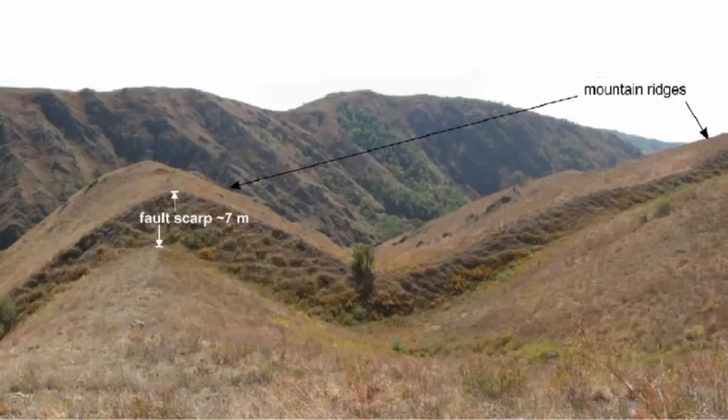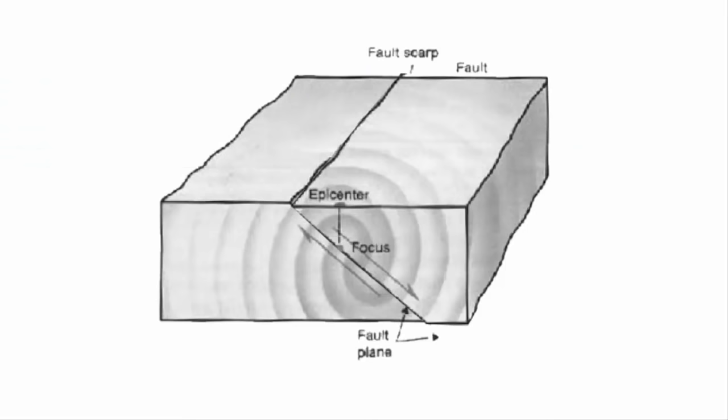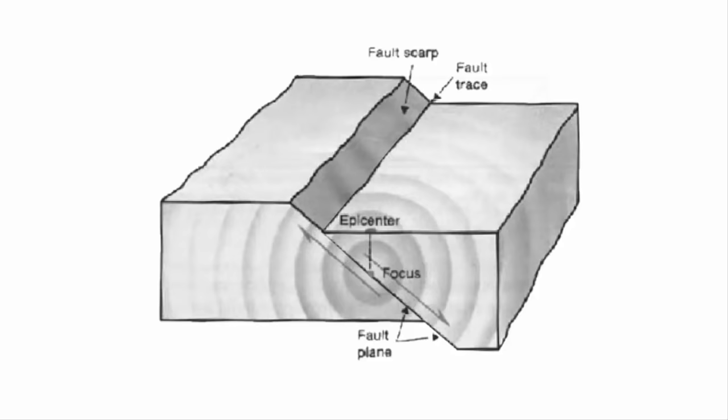Now the question is, why does the earth shake? To understand that, you will have to look at this picture. This is a fault. A fault is a sharp break in the crustal rocks. Rocks near a fault tend to move in opposite directions. That creates friction, but at some point of time, their movements overcome the friction. As a result, they slide past one another.